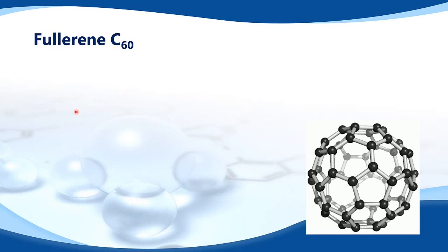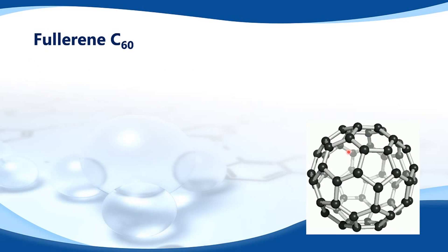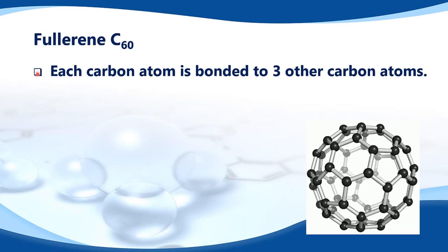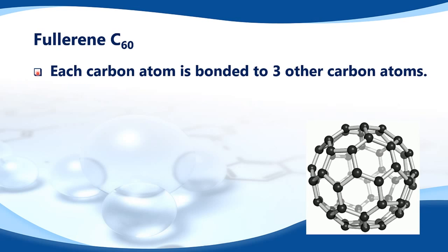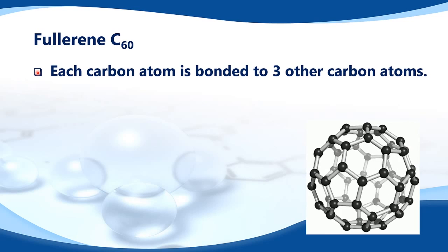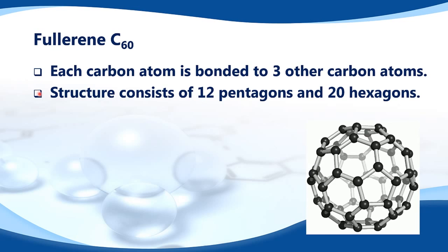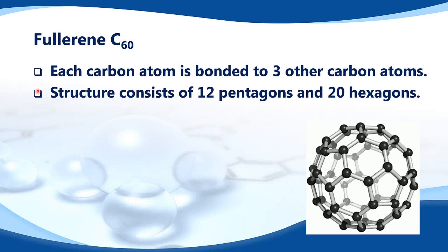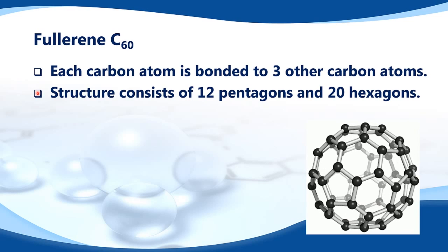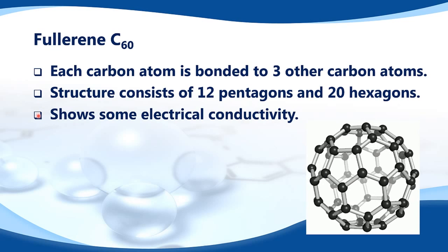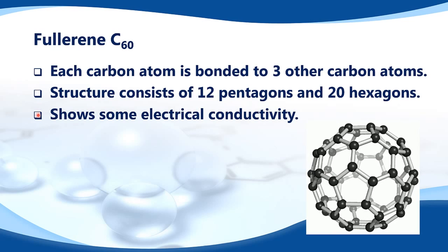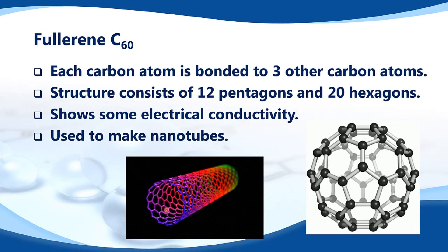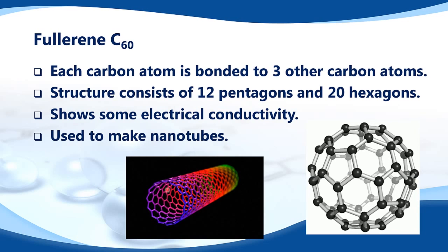Next is fullerene C60. Here is a rotating model of it. Each carbon atom is bonded to three other carbon atoms. The structure consists of 12 pentagons and 20 hexagons. It shows some electrical conductivity and is used to make nanotubes.